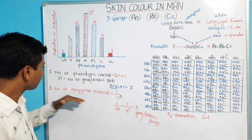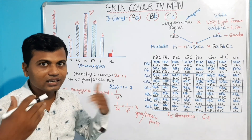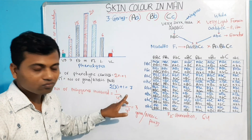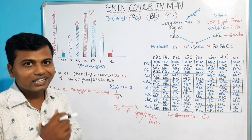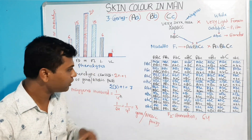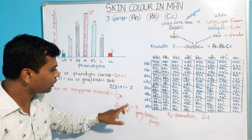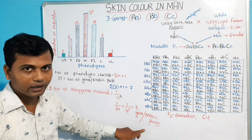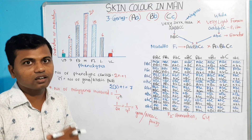Now, the number of polygenes controlling the trait can be calculated by the formula (1/4)^N, where (1/4)^N equals the ratio of F2 individuals expressing either extreme phenotype. Here, that ratio is 1/64, which equals (1/4)^3, giving N = 3. So, 3 genes or 3 allelic pairs are responsible for the inheritance of skin color in humans.